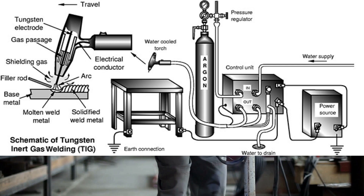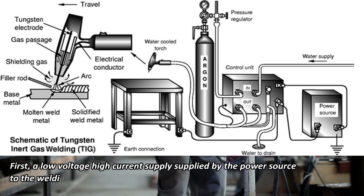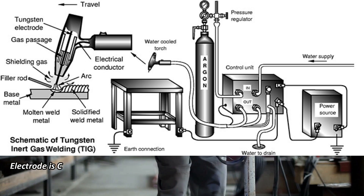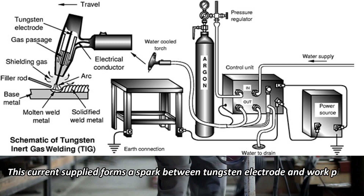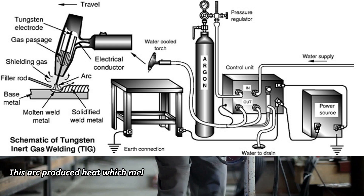Now let's understand the working of tungsten inert gas welding. First, a low voltage, high current supply is supplied by the power source to the tungsten electrode. Mostly the electrode is connected to the negative terminal and the workpiece to the positive terminal. This current forms a spark between the tungsten electrode and the workpiece. Tungsten is a non-consumable electrode which gives a highly intense arc. This arc produces heat which melts the base metals to form a welding joint.